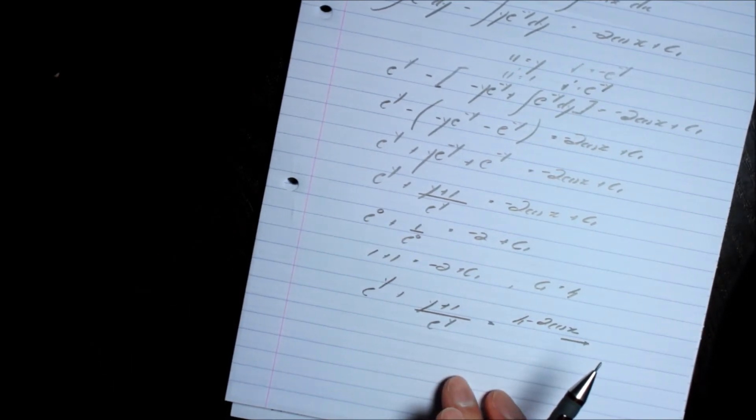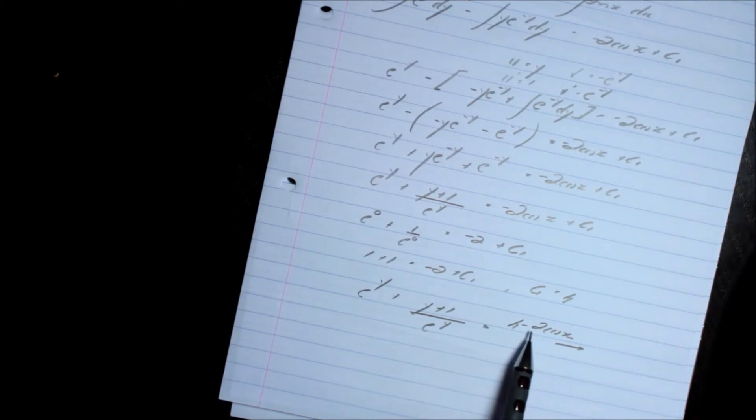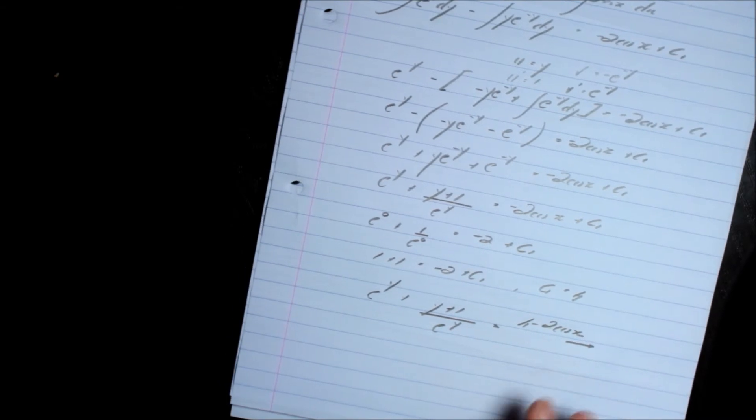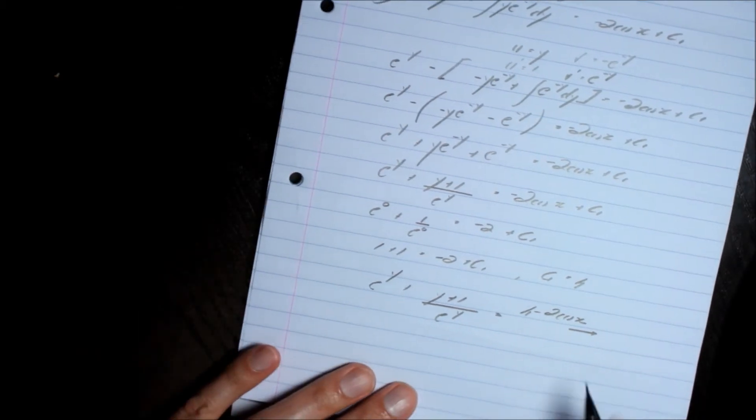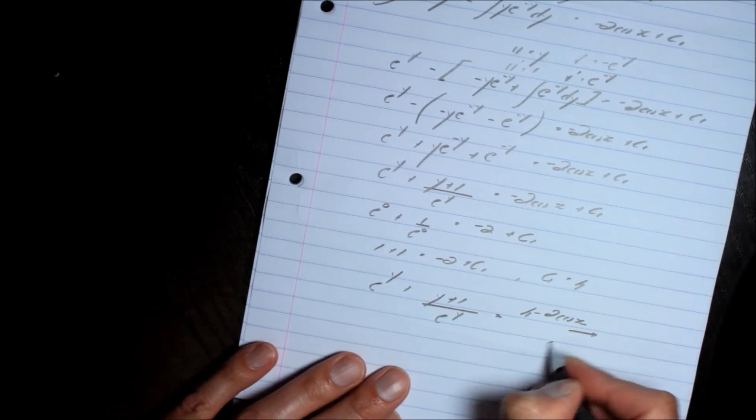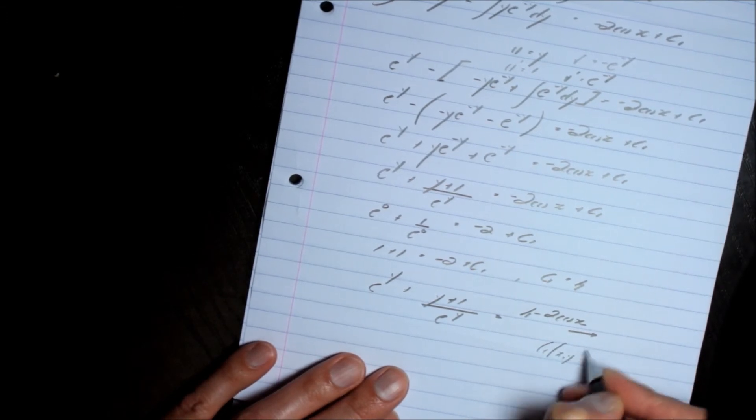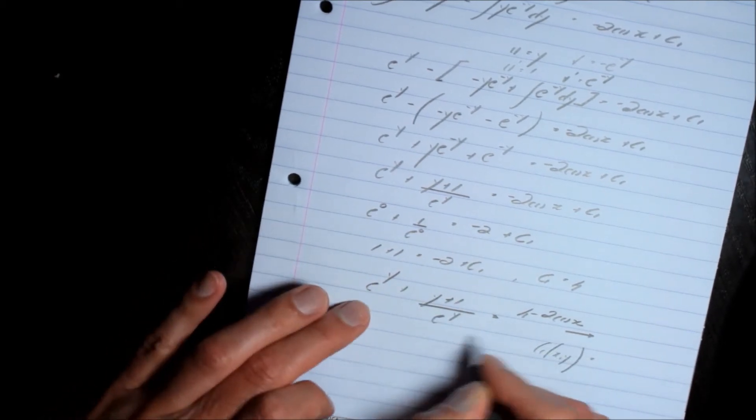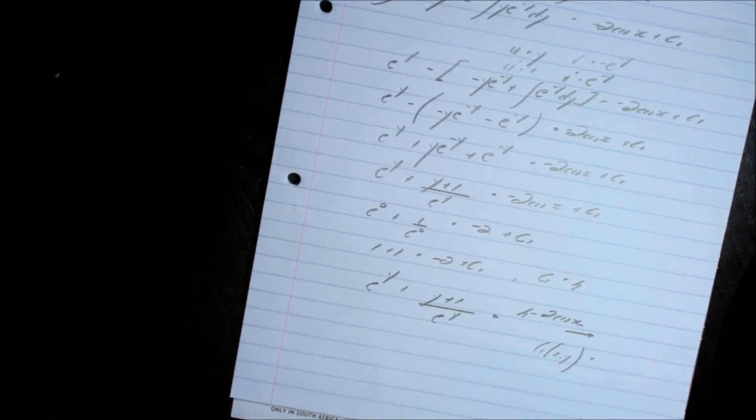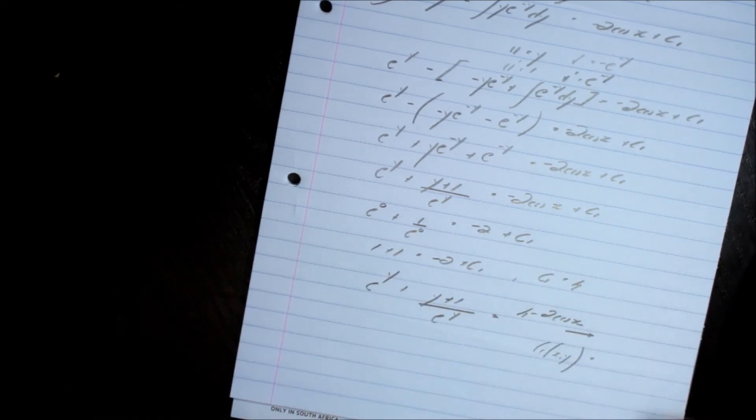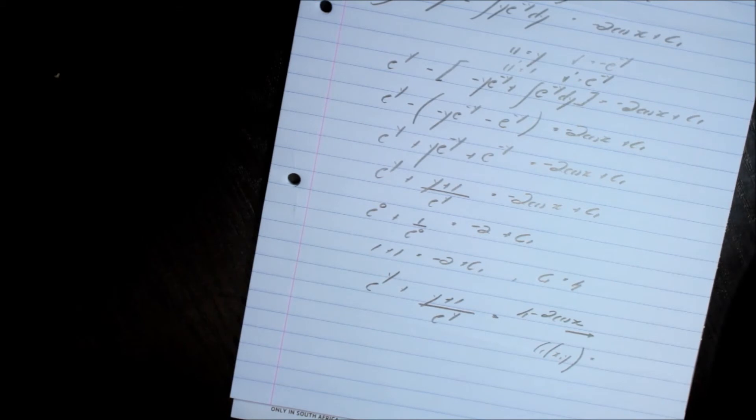And I suppose one way to solve this is to bring this all to one side so that equals 0. And I'm going to construct, as we did in multivariable calculus, a new function g(x,y) which is now going to equal this minus that.